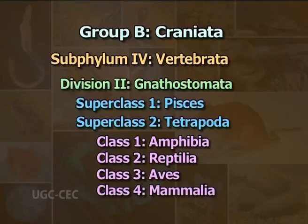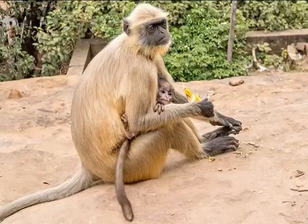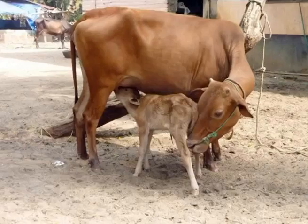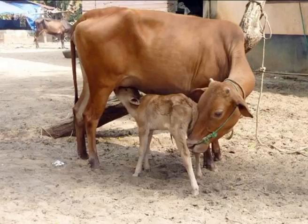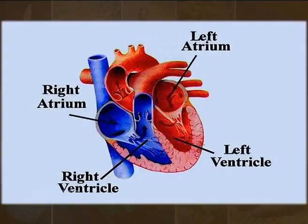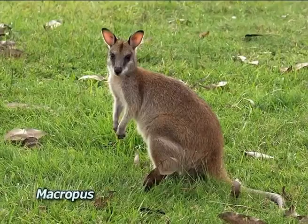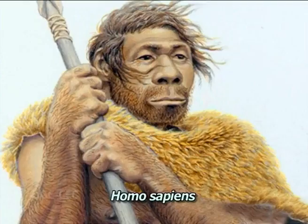Class 4: Mammalia — in Latin, mamma means breast. Mammals' bodies are usually covered with hair. A major characteristic of this class is that females possess mammary glands which secrete milk for suckling the young. Heart is four-chambered. These are warm-blooded and air-breathing vertebrates. Approximately 4,500 well-known species belong to this class. The most common examples are Echidna, Macropus, Rattus and Homo sapiens.